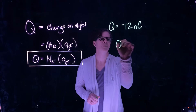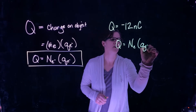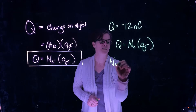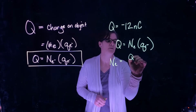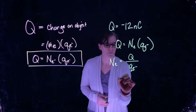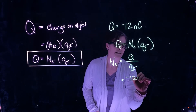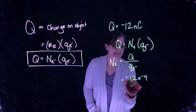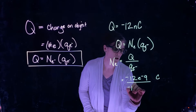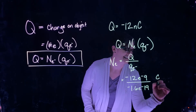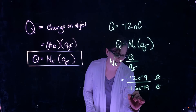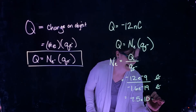Using the relationship Q equals the number of electrons times the charge of an electron, and rearranging to solve for the number of electrons, we get: number of electrons equals total charge divided by the charge of an electron. So that's negative 12 times 10 to the minus 9th coulombs, divided by negative 1.6 times 10 to the minus 19th coulombs. The coulombs cancel, and the total number of electrons is 7.5 times 10 to the 10th electrons.